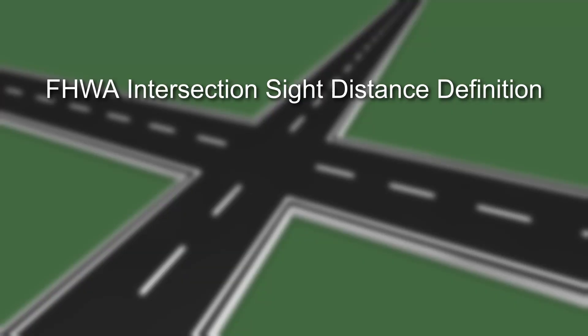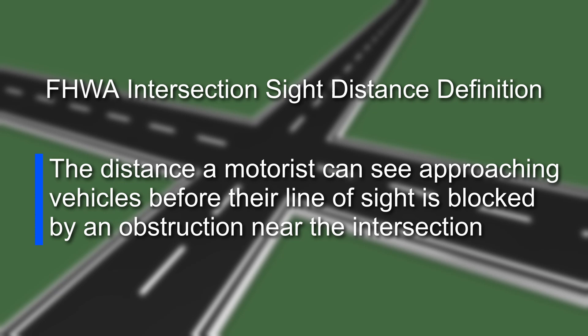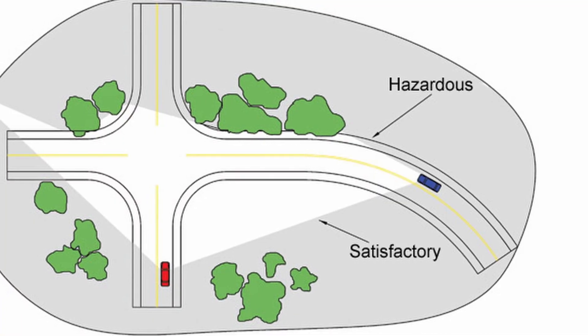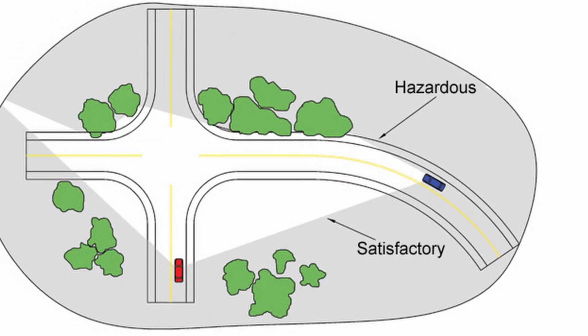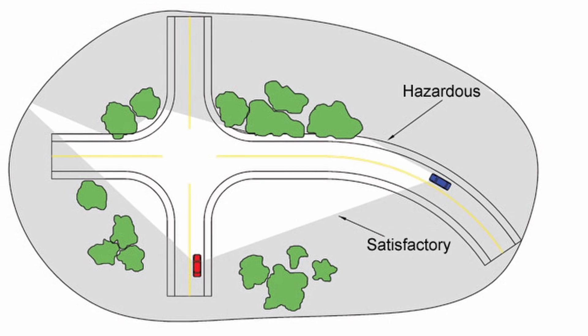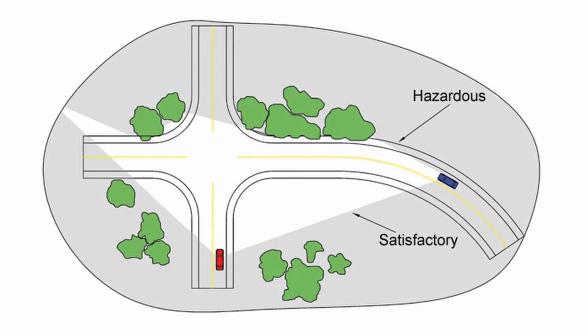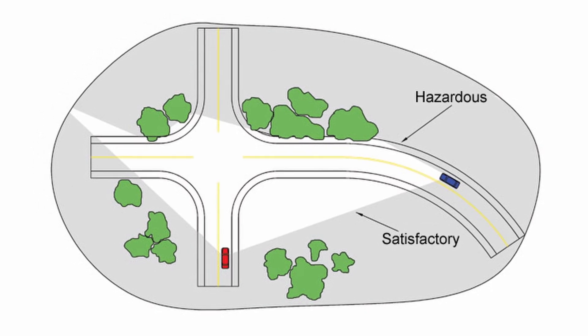Insufficient sight distance can be a contributing factor in intersection fatalities. The FHWA defines intersection sight distance as the distance a motorist can see approaching vehicles before their line of sight is blocked by an obstruction near the intersection. The driver of a vehicle approaching or departing from a stopped position at an intersection should have an unobstructed view of the intersection, including any traffic control devices and sufficient lengths along the intersecting roadway to permit the driver to anticipate and avoid potential collisions.